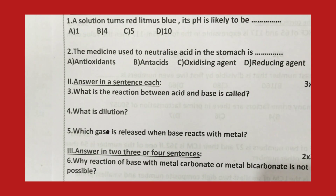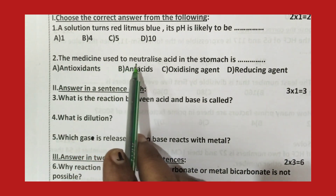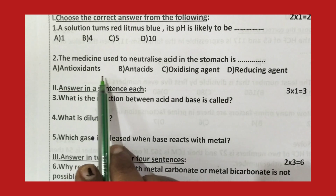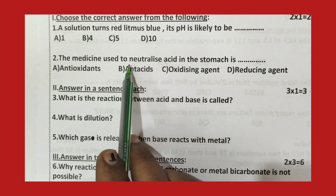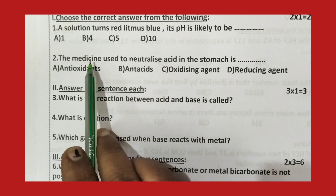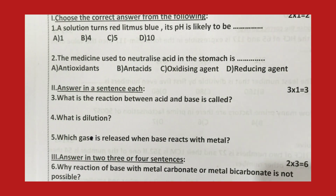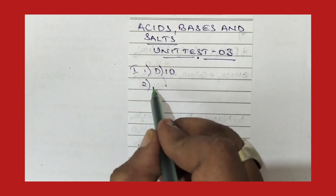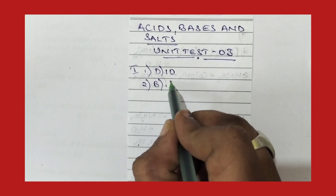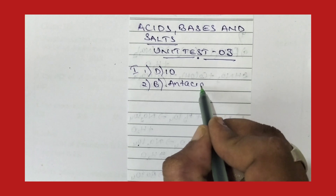The second question is: the medicine used to neutralize acid in the stomach is? Among the four options, the right answer is antacids. Antacid is a medicine used to neutralize acid in the stomach. So for the second question, the right option is option B, that is antacids.